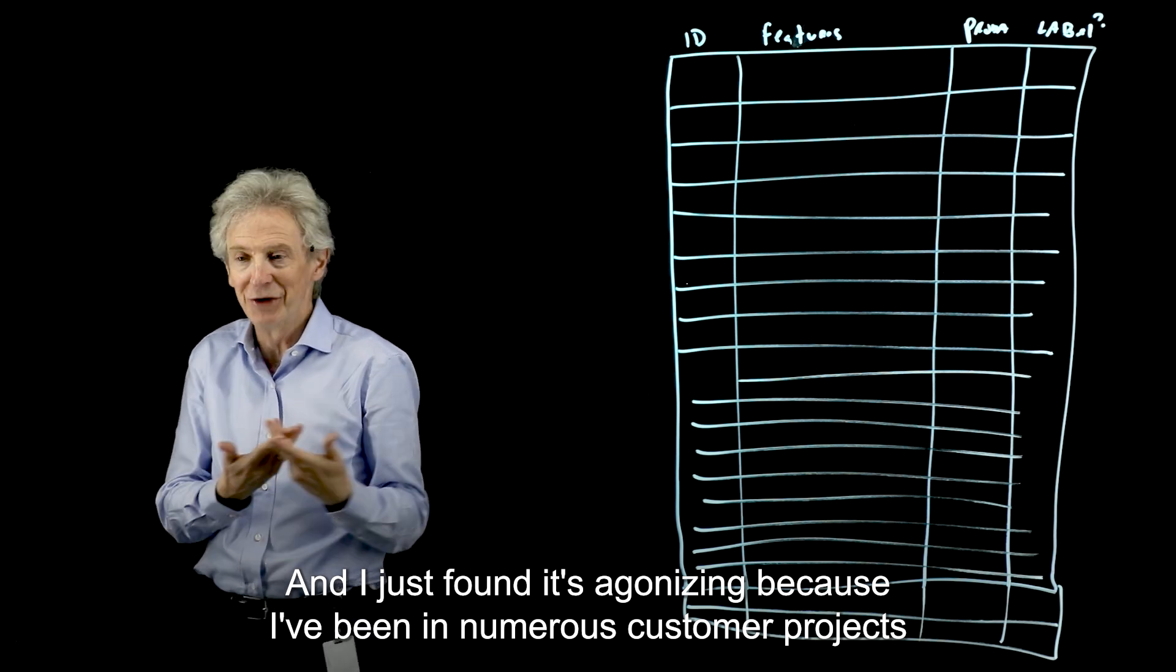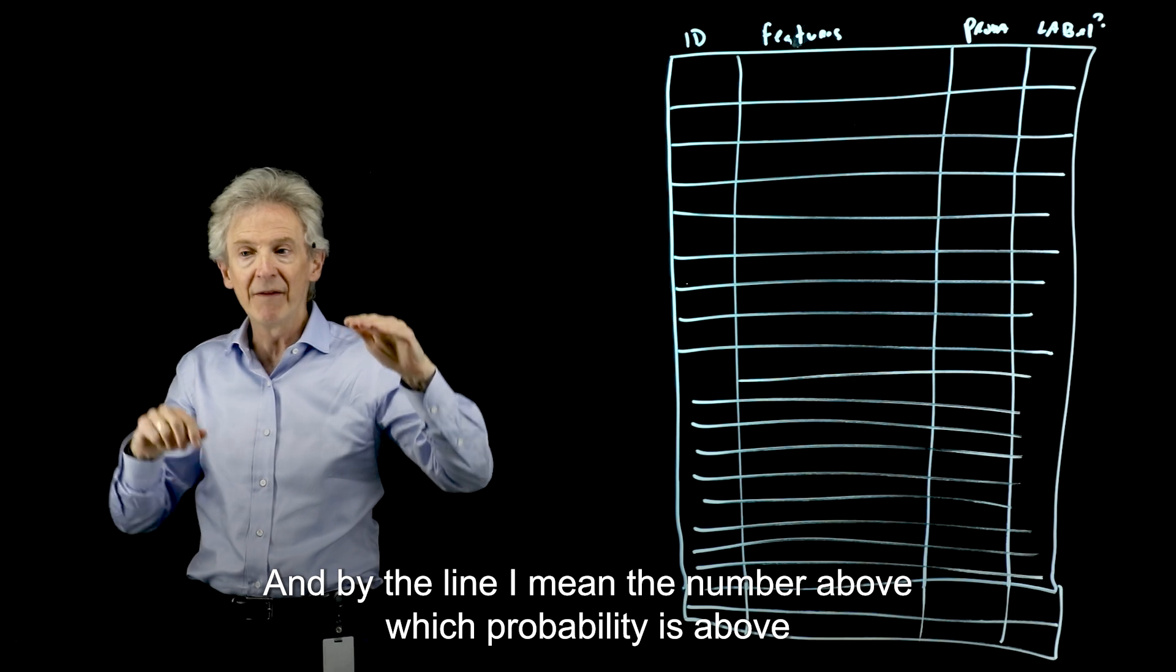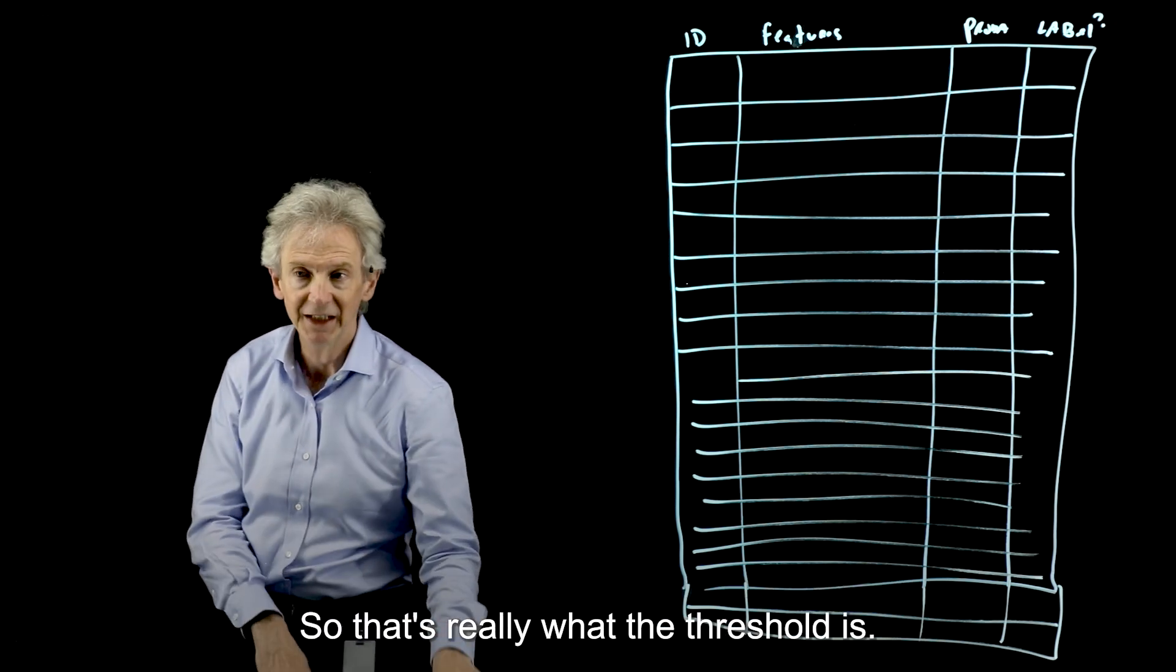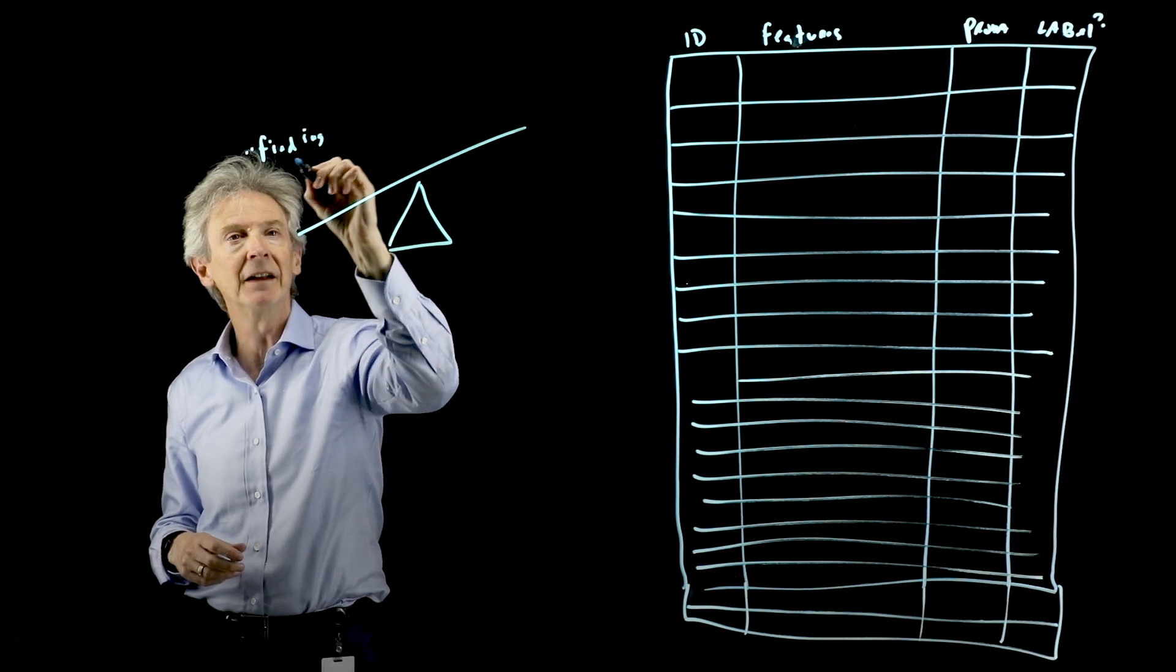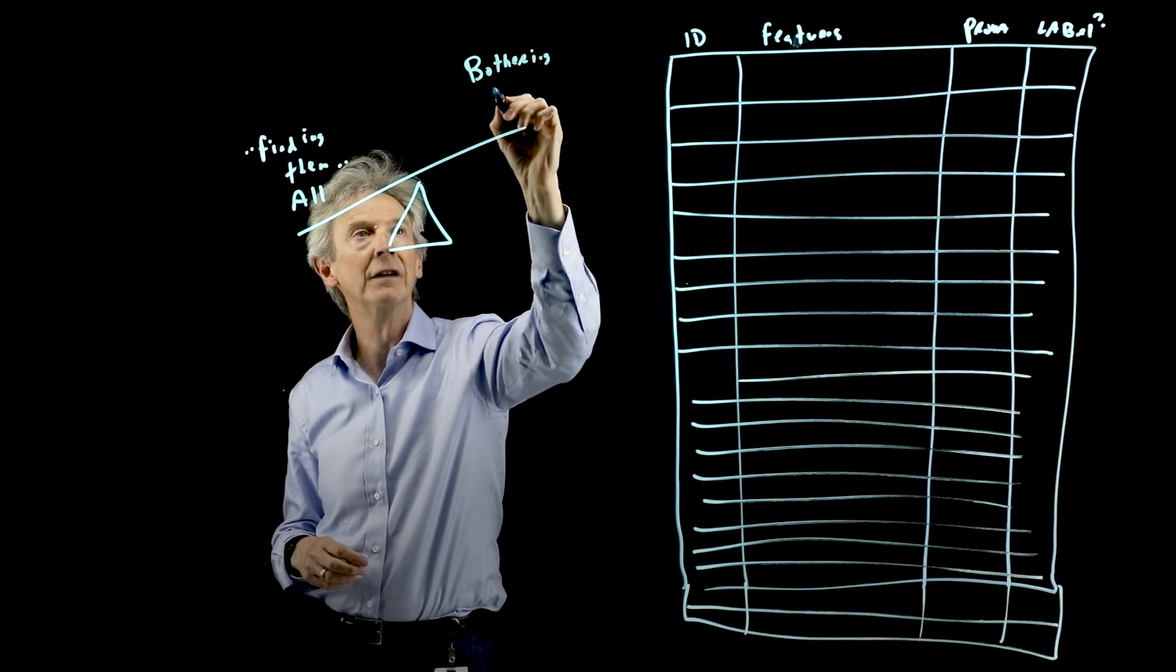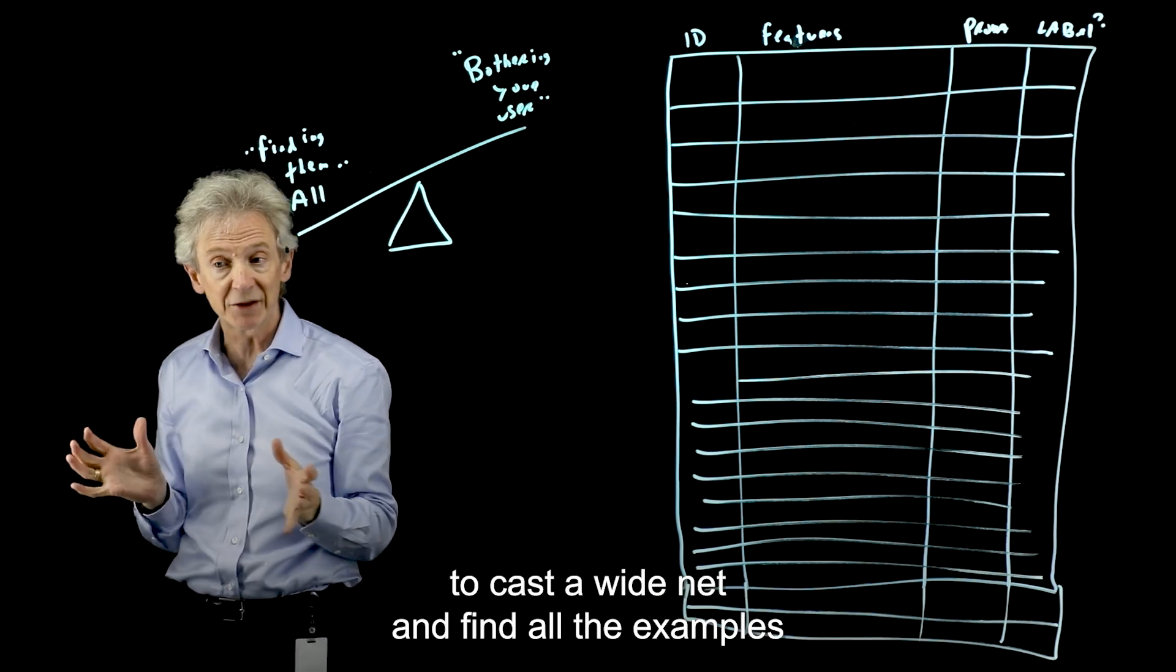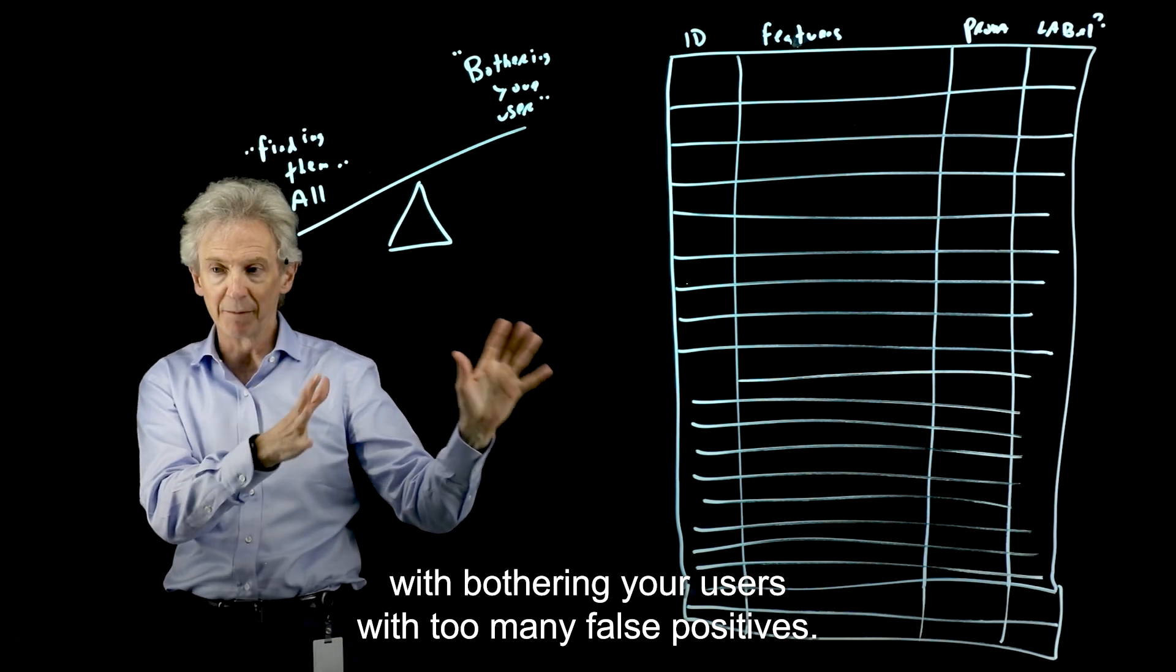But it gives you an agonizing decision. And that is this threshold. And I just found it's agonizing because I've been in numerous customer projects where there have been many hours discussing where to draw this line. And by the line, I mean the number above which, probabilities above that line, you're going to say those are positive. Those are yes. And numbers below the line, you're going to say no and leave those alone. So that's really what the threshold is. And I would describe this as a balance between finding them all and bothering your users with false positives.